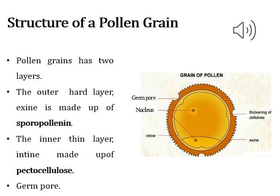Pollen grains consist of two major layers: the outer rough exine and the inner smooth intine. The exine consists of sporopollenin as wall thickening, and the intine consists of pecto-cellulose as wall thickening. A small pore is present on the surface of the pollen grain called the germ pore. Through this germ pore, a germ tube is produced, and through that germ tube the male gametes are transferred to the ovary.